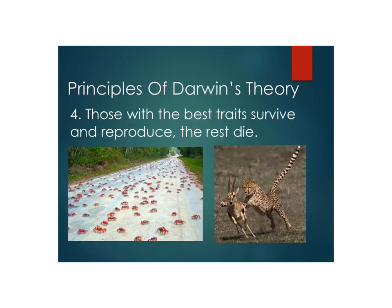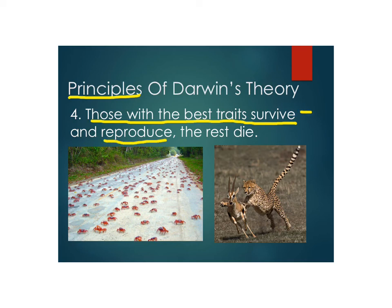The fourth principle is really the heart of natural selection — the heart of Darwin's theory. He said that those that have the best traits will survive. Those that have the variation of traits best for that moment in time and that place will survive, reproduce, have more babies, and their babies will have their good traits. The rest will die. Over time, the population will have more traits that are better for that environment. If the environment changes, the whole game changes.